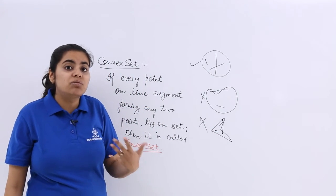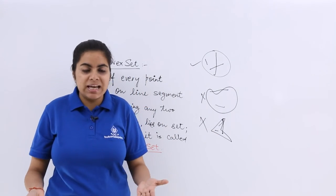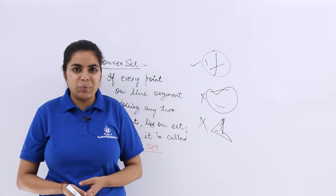So now you understand what diagram will yield a convex set and which will not be a convex set.